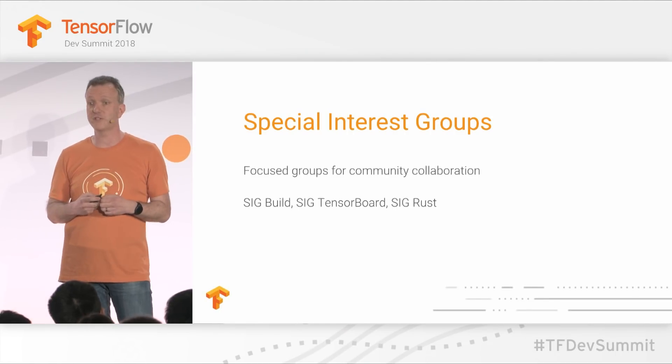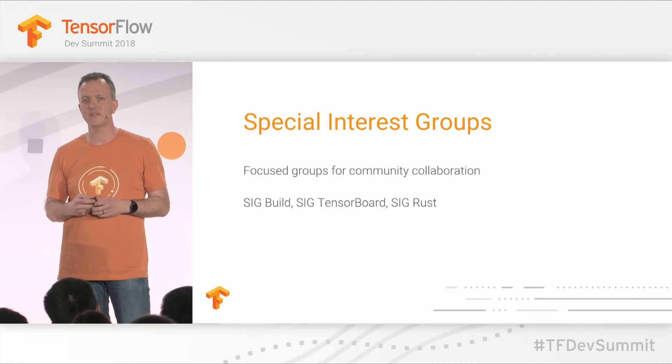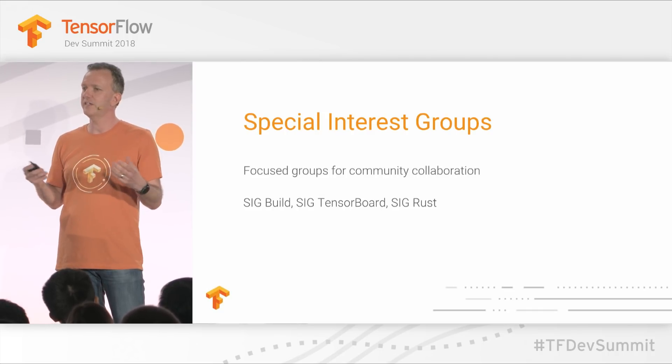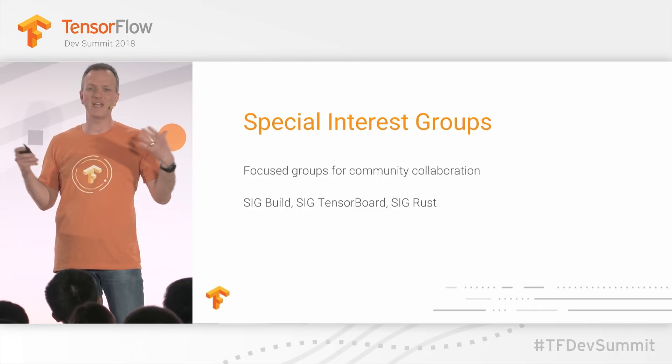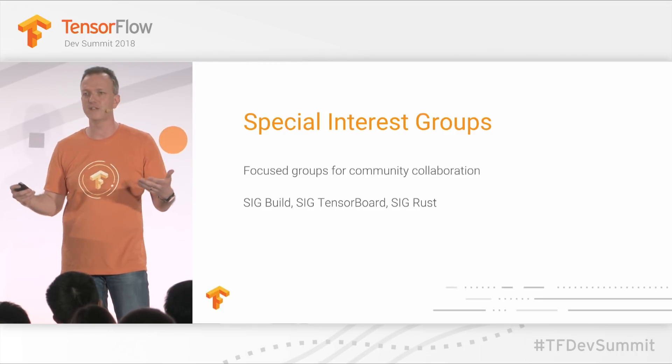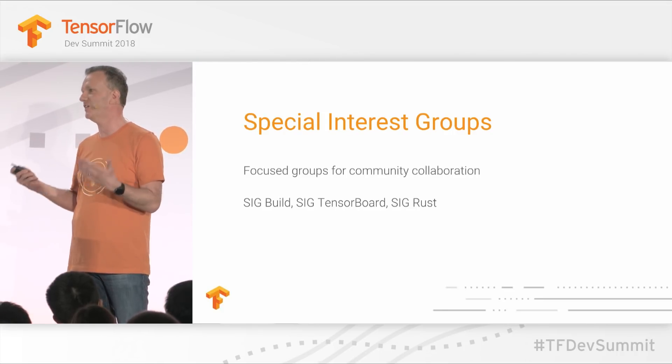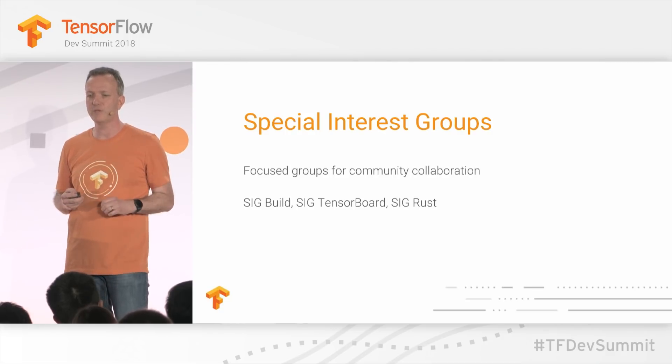That's just the pilot SIG. We want to pave the cow paths — where there is energy and people collaborating on a particular thing, that's a great candidate for a special interest group. This week we're also bringing online a group for TensorBoard, where key stakeholders of the TensorBoard ecosystem can focus on design and collaboration. And also for the Rust language bindings, which is a completely community-driven part of TensorFlow. Each SIG will have a different personality, way of working, and community, but the common thread is forums where, if you have a shared interest in a particular area of TensorFlow, you can focus on it.